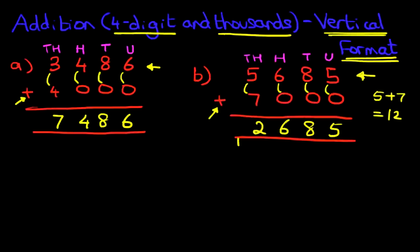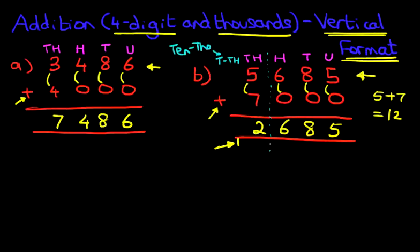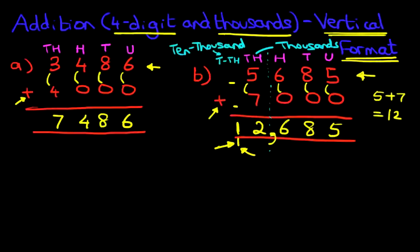We've now got a one in a new column. What is that new column? I'll change colors for this — it's the ten thousands. To the right we have hundreds, tens, and units. On the left we have thousands, and further left is the ten thousands column. There are no ten thousands in either number, but there is one carried at the bottom, so we add that in. Putting a comma between the thousands and the hundreds, the answer is twelve thousand, six hundred and eighty-five.